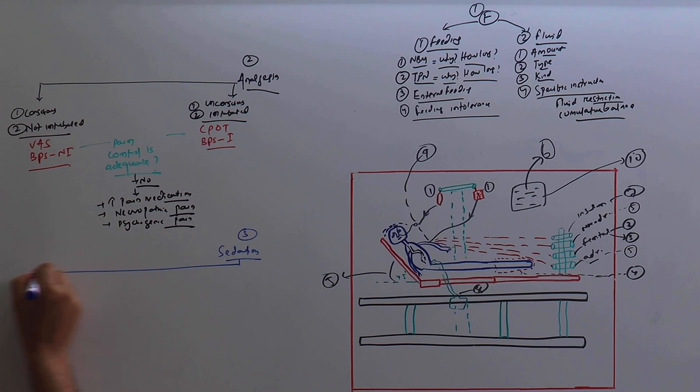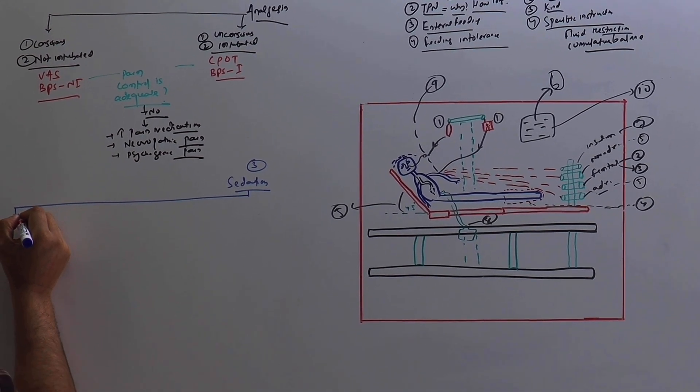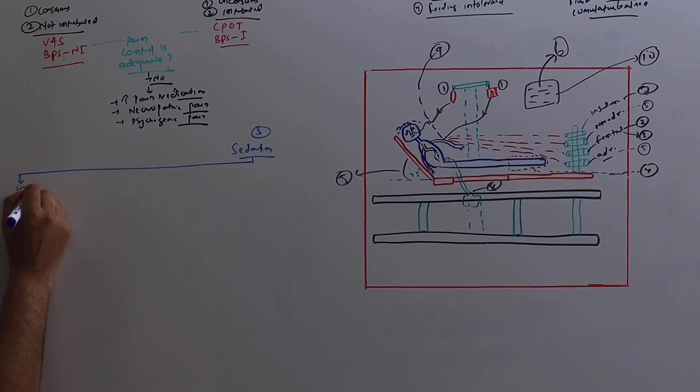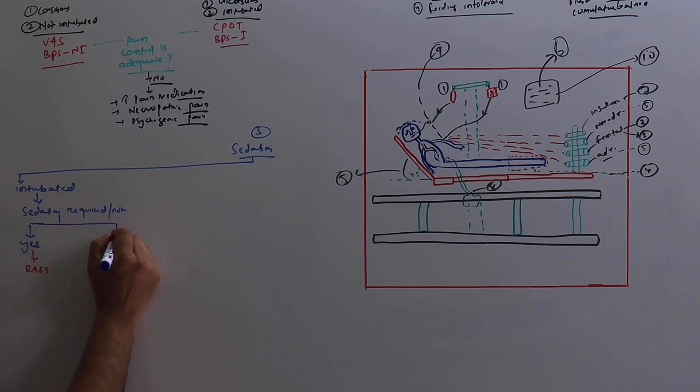Number three is sedation. In the sedation part, also we have two things. Number one: patient is intubated. Next question is sedation required or not. If answer to this question is yes, here we need to check for the RASS score—Richmond Agitation Sedation Scale—and ensure that patient is adequately sedated.